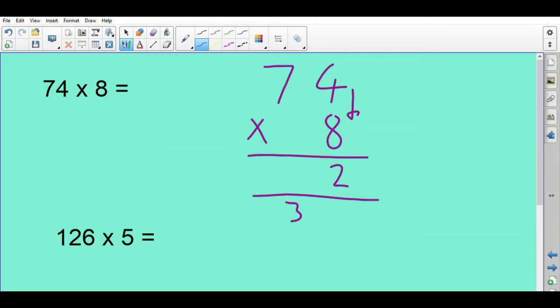7 times 8 is 56. Good way to remember. 7 times 8 is 5,6,7,8. So 7 times 8 is 56. Add the 3 is 59. So 592. Then our last one.